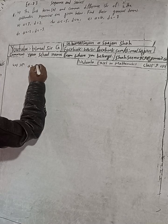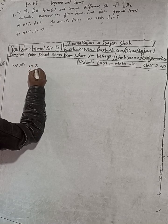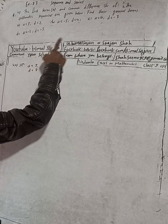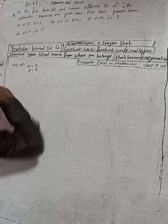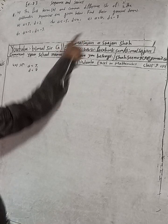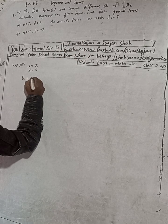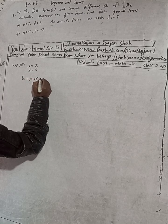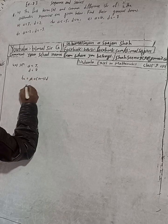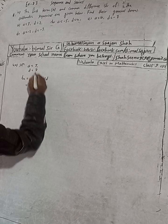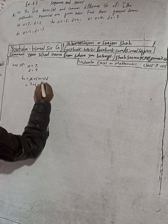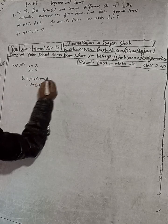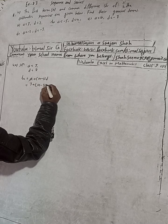For part A solution: A is equal to 3, D is equal to 2. That means 3 is the first term. We have to find the general term. The general term formula is Tₙ = A + (N-1) × D. So that is 3 plus N minus 1 into D, where D value is 2.